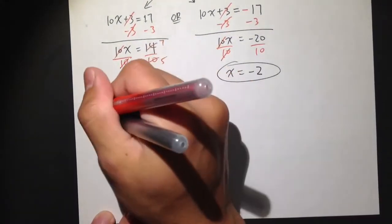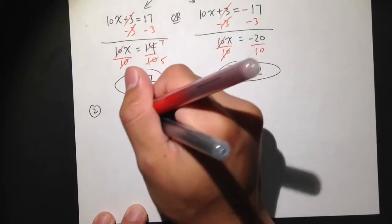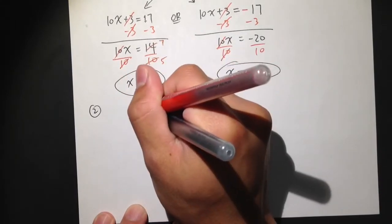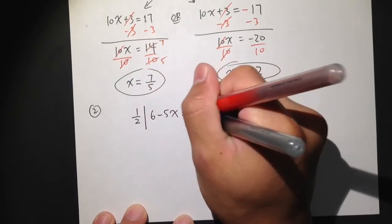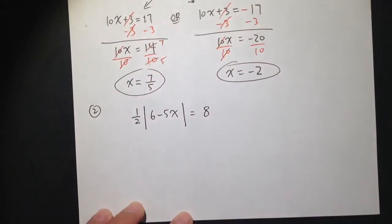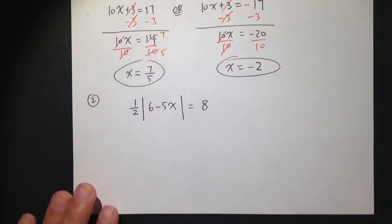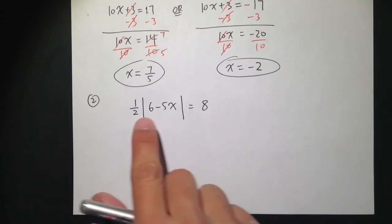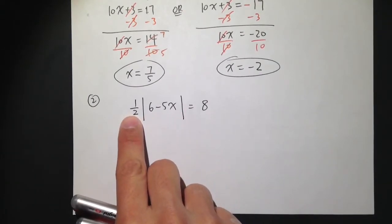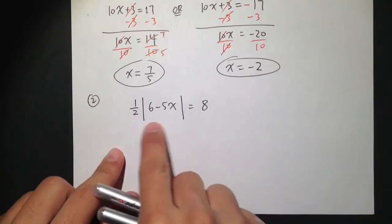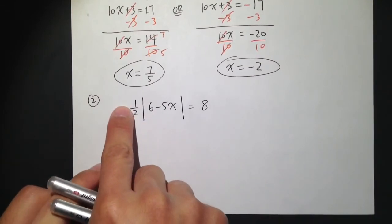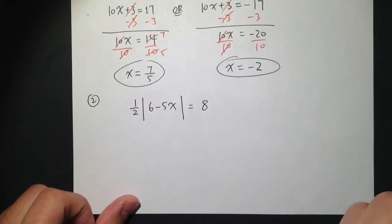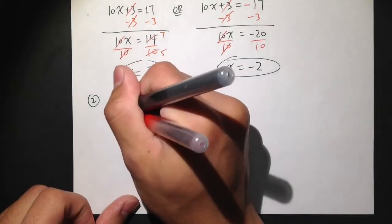Continue with example number 2. In this case, let's look at one half times the absolute value of 6 minus 5x equals 8. Here we do not have the absolute value by itself — we have the one half in front of it. So to get the absolute value by itself, we have to take care of the one half by multiplying both sides by 2.